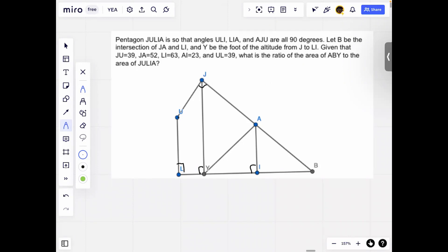So JU is 39, JA is 52, LI is 63, AI is 23, and UL equals 39. First, if we draw the height here and the height here, then say that this angle is yellow.